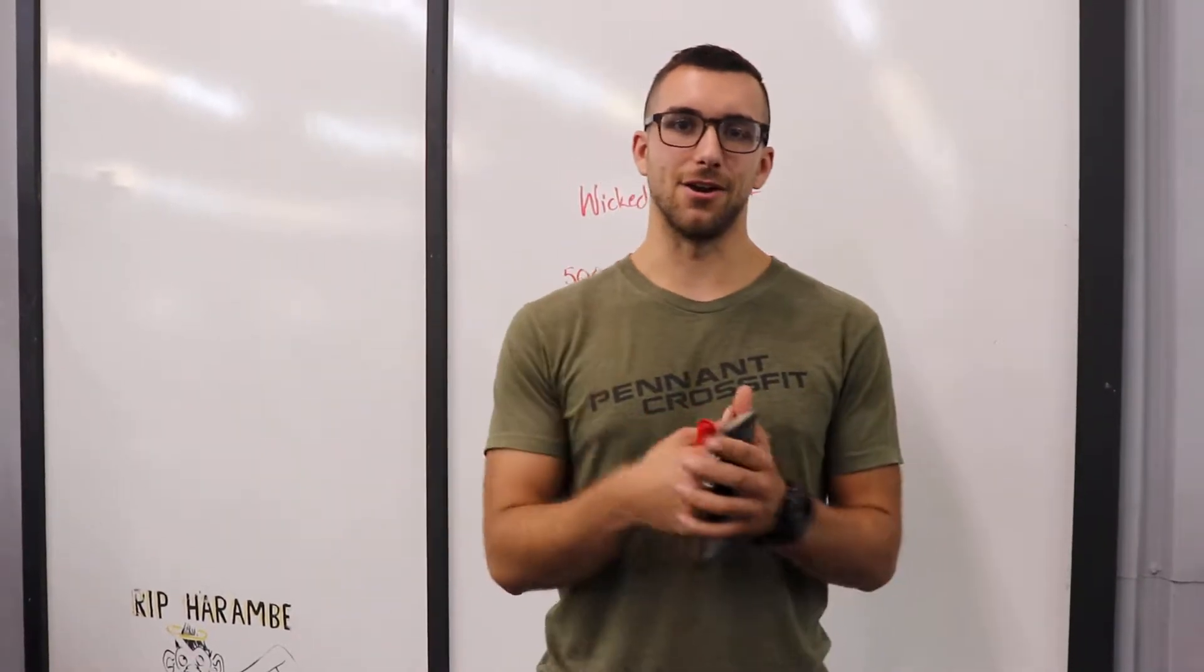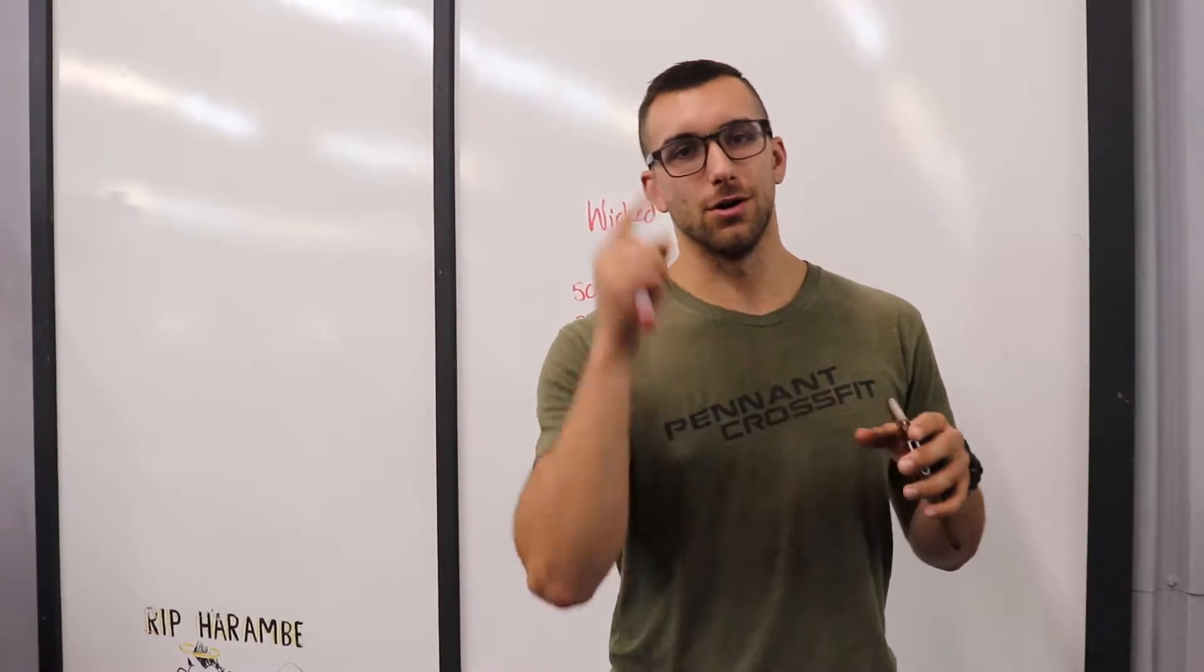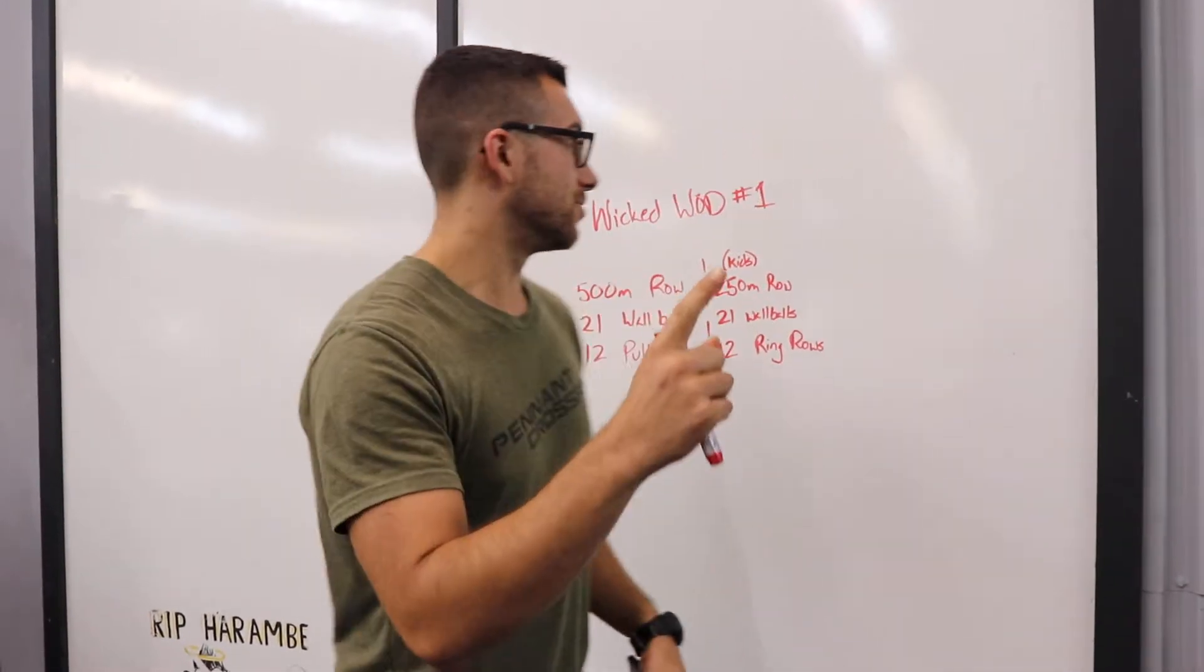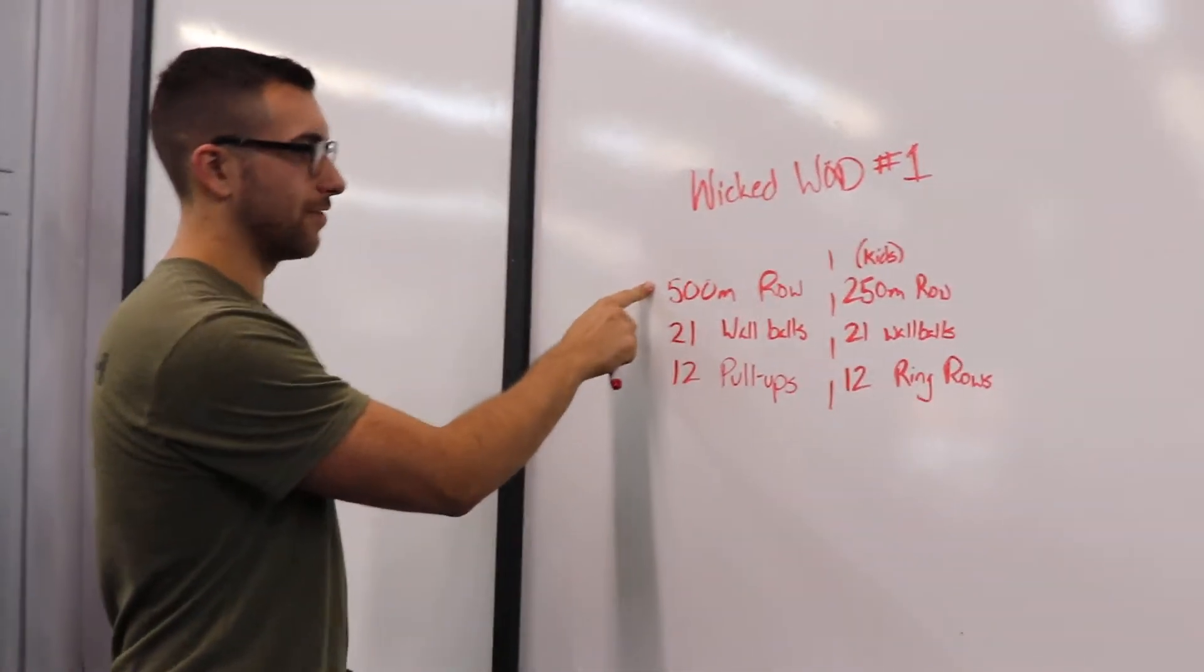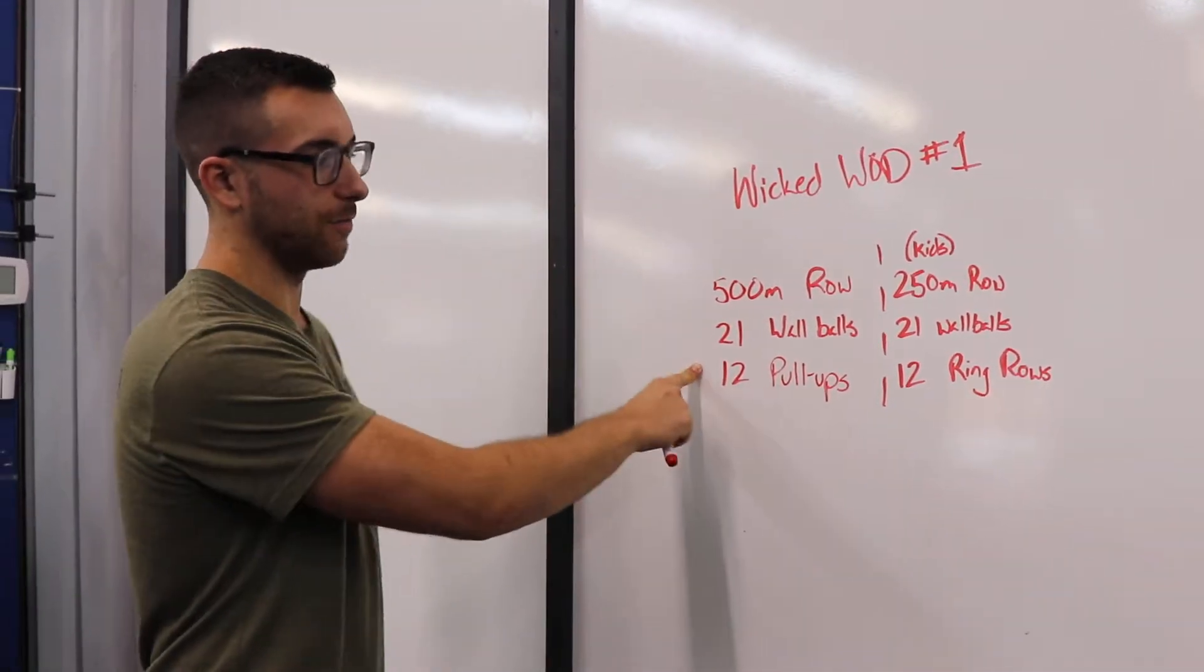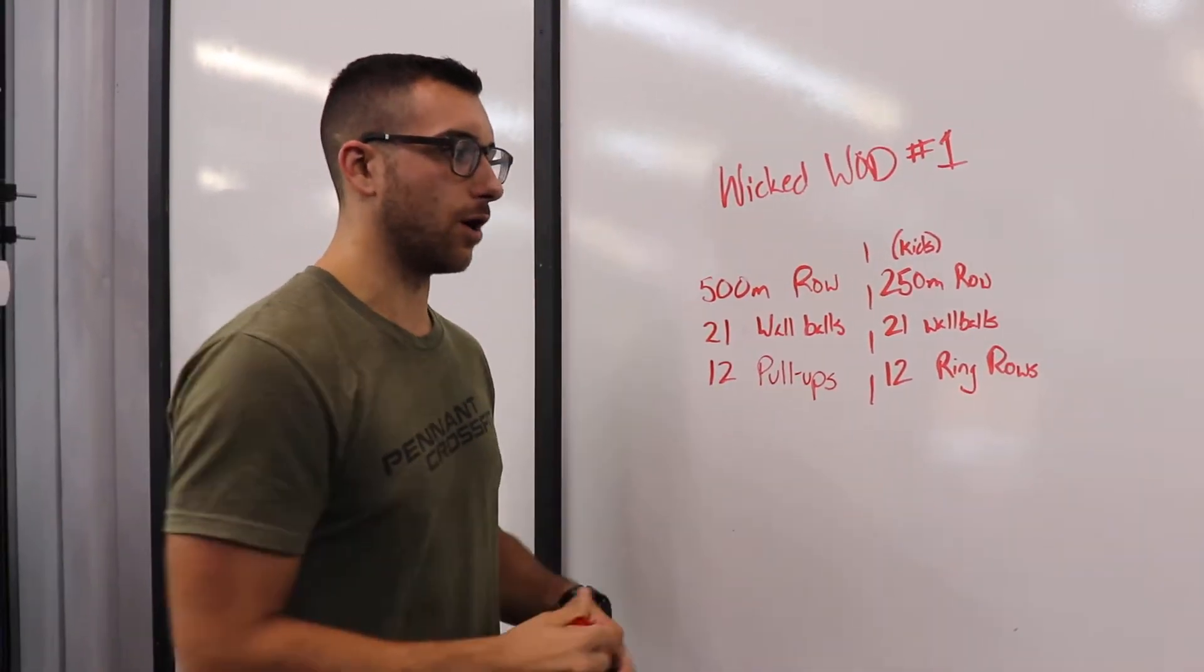What's going on guys, I'm here to announce Wicked WOD workout number one. We've got a 500 meter row, 21 wall balls, and 12 pull-ups. For the kids, it is a 250 meter row, 21 wall balls,